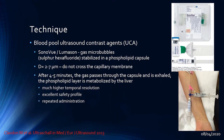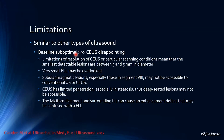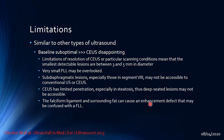There are some limitations for CEUS, similar to other types of ultrasound. The smallest detectable lesions are between 3 and 5 millimeters in diameter. Very small focal liver lesions can be overlooked due to resolution limitations. Sub-diaphragmatic lesions, especially in segment 8, are sometimes difficult to visualize. CEUS has limited penetration in steatosis, and the falciform ligament can cause enhancement defects that may be confused with focal liver lesions.